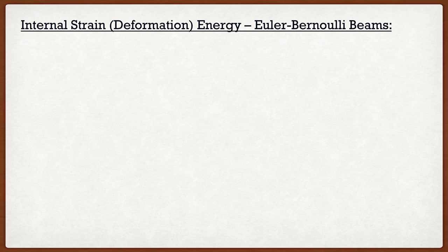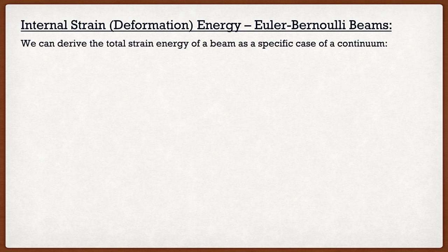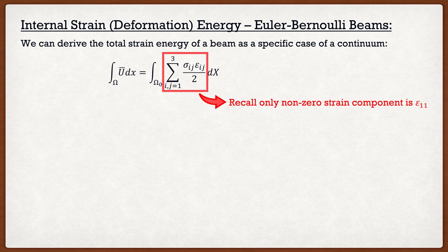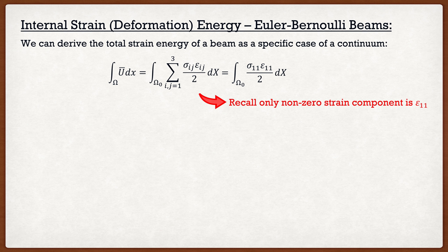That was for continuums. But in this course, we mainly deal with Euler-Bernoulli beams, so what we'd like to do is determine a nice equation for the internal strain energy of an Euler-Bernoulli beam. We can actually derive this total strain energy for a beam as a specific case of a continuum. For a continuum, the strain energy is simply the summation of σ_ij multiplied by ε_ij divided by two, integrated over our domain. For Euler-Bernoulli beams, recall that we only had one non-zero strain component: ε_11. Therefore, the equation simplifies to the integral over the domain of σ_11·ε_11 divided by two.